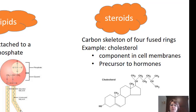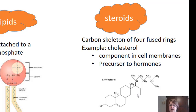The third group of lipids is steroids. A steroid is a carbon skeleton of four fused rings — the rings can be hexagons or pentagons but there are always four clearly indicated rings. Our main example of steroids we're responsible for knowing is cholesterol, which is a component of cell membranes and also a precursor to hormones.